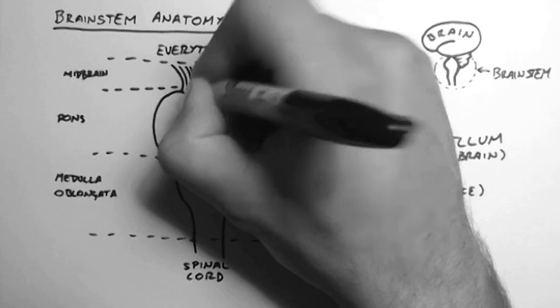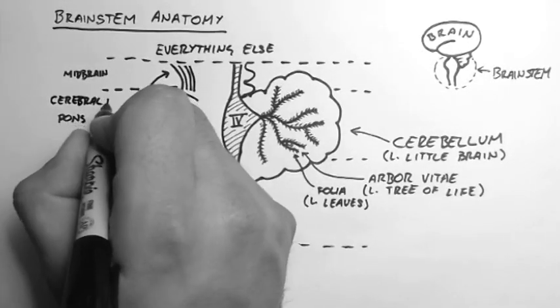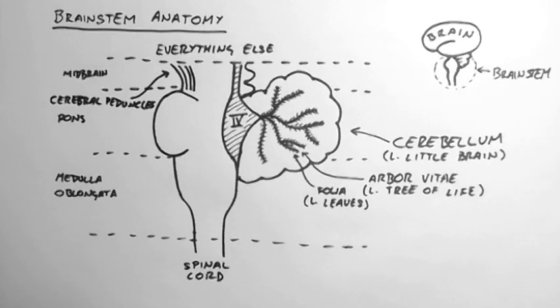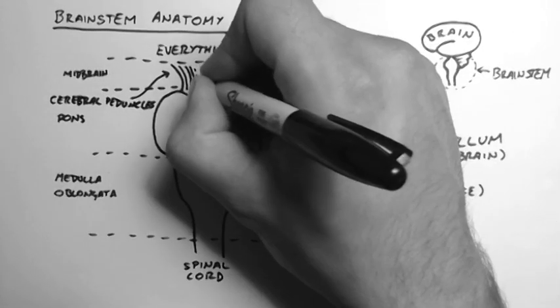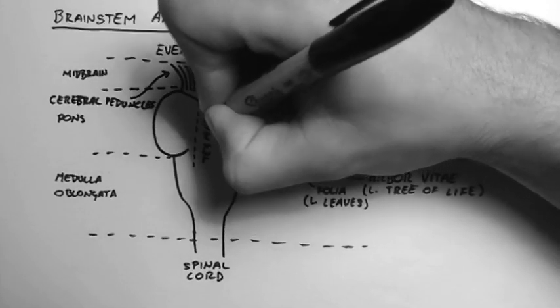Now the front part of this midbrain is called the cerebral peduncles. And then everything behind that running right the way down the brain stem is called the tegmentum.